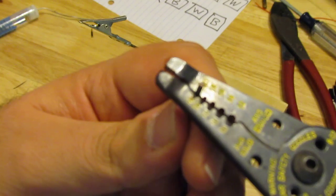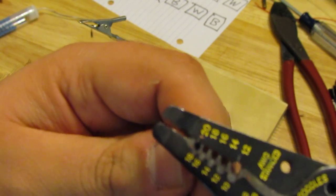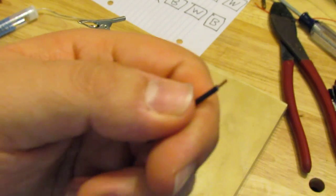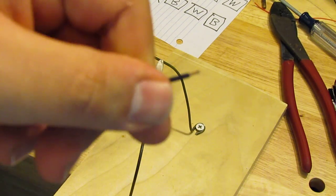So you're going to squeeze the tip of it, just like that, and then pull. And then there you go, you have a stripped wire.